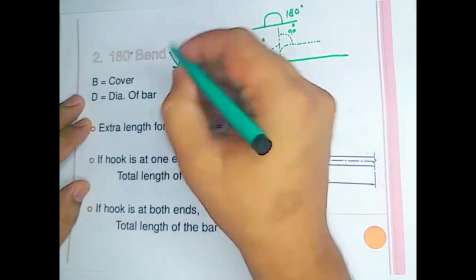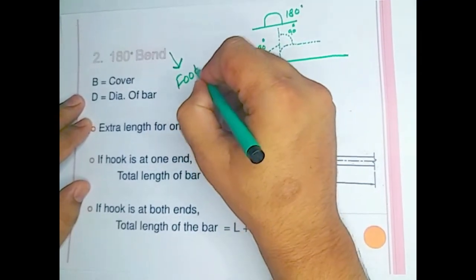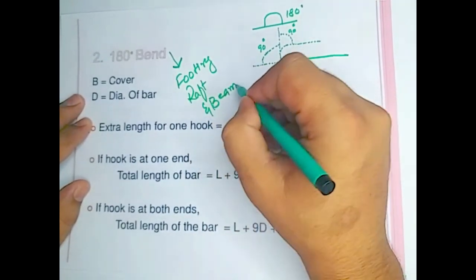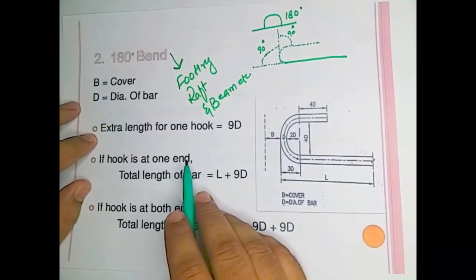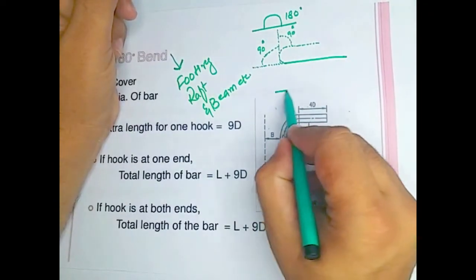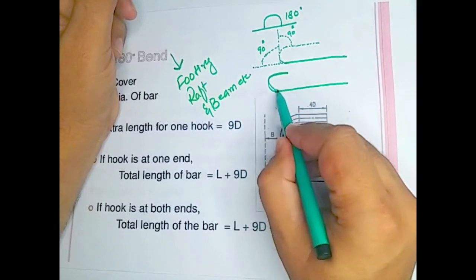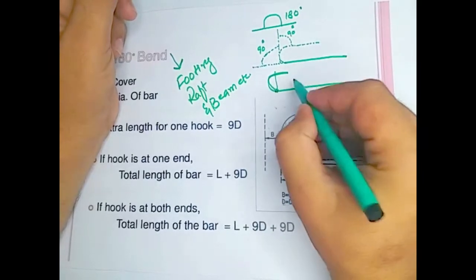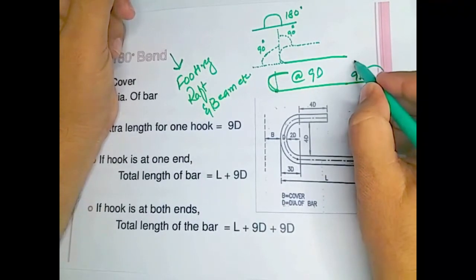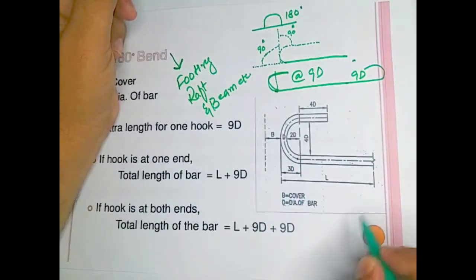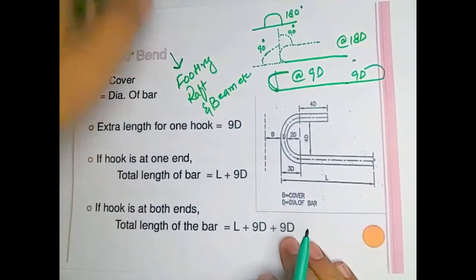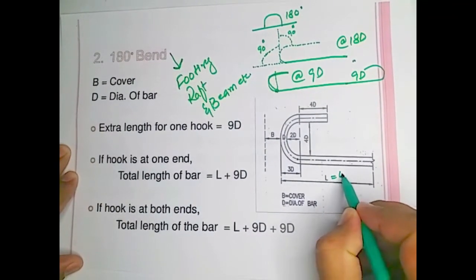This type of 180 degree bend is normally provided in footings and drop beams. For one side, we add 9 × d for one hook, and 9 × d for the other side. So the total extra length for both hooks is 18 × d. For example, if the steel bar length is 4 feet...